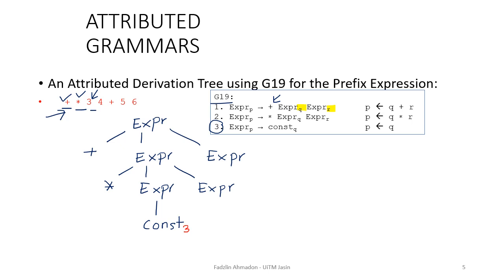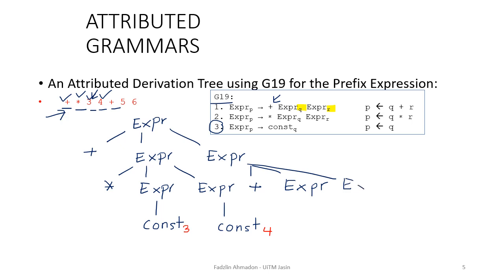Moving on, we're done with 3. Next, we move to input 4 — again implementing rule three: constant with the attribute of 4. Next, we write plus, applying rule number one: plus expression expression. Then 5, another implementation of rule three with the value of 5. And finally, the last input is 6, also an implementation of rule three with the attribute of 6. So we are done with the first step.